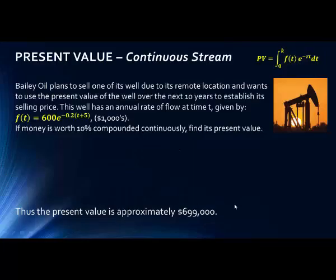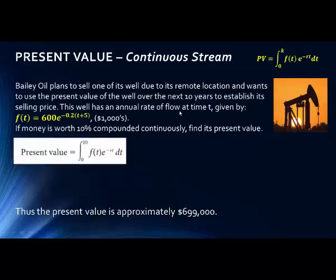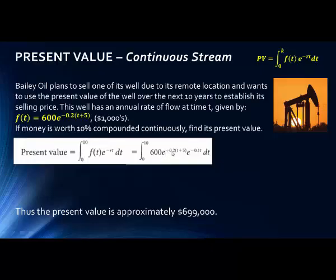Let's look at another problem. We're back to Bailey Oil with a different function as its rate of flow. We want to figure out the present value of the well over the next 10 years to establish a selling price, assuming we can earn 10% compounded continuously. Here's the formula — let's plug it in. We have 600e^(−0.2t + 5) as the given function, and since we want the present value, we multiply by e^(−rt), where r is 10%, so it's negative 0.1.